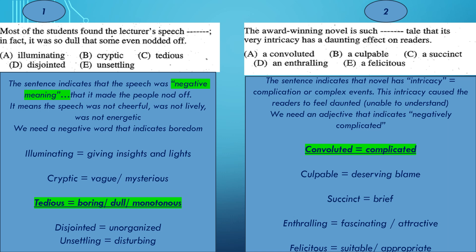So we need a negative word that indicates boredom. We have the meanings here. Illuminating means giving insights and light on something — it means something positive. Cryptic means vague or mysterious. Tedious means boring, dull, or monotonous. Disjointed means unorganized. And unsettling means disturbing. We have one positive meaning, which is illuminating, and we'll cancel it. The other four choices are negative, but we specifically need a negative meaning that is boring. So we'll go for tedious.